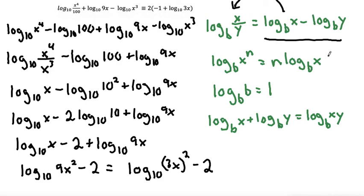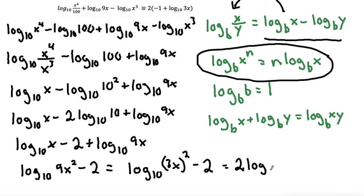And then I can use this rule again. When I have an exponent, I can kick it to the front, and I can make that 2 log base 10 of 3x minus 2. And then if I factor out my 2 and I move my terms, move the negative 2 to the front, I would get 2 times negative 1 plus log base 10 of 3x, which is what I was trying to make it look like.